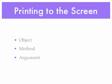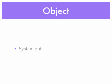In order to print to the screen, we need an object, a method, and an argument. The object we'll use is System.out — that's a capital S. This object, System.out, comes with the Java language, so we don't have to do anything special to use it, just type in System.out. Remember that's a capital S.